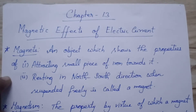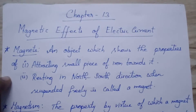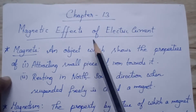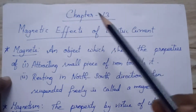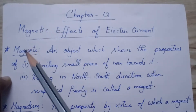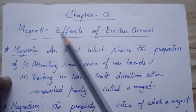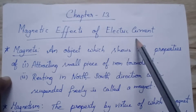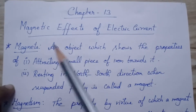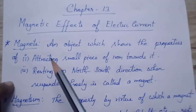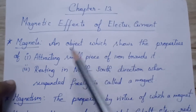Hi dear, today we will start with Chapter 13, Magnetic Effects of Electric Current. We have already learned about the heating effect of electric current in the previous chapter. Likewise, here we are going to study about the magnetic effects of electric current. First we will learn about the magnet, then we will go for the magnetic effects of electric current.